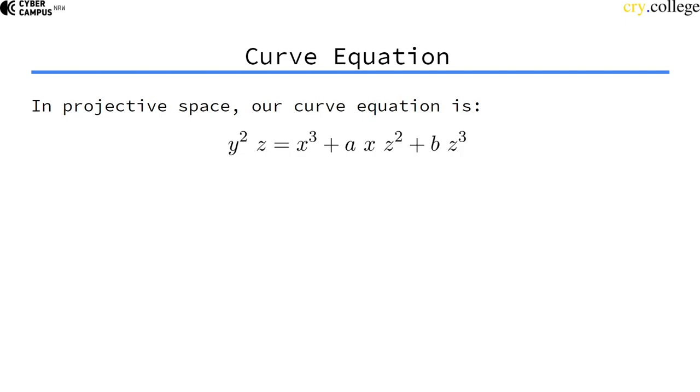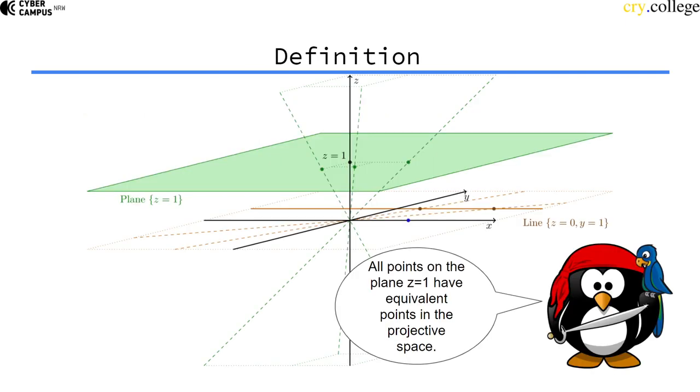So in projective space our curve equation is actually a bit different as you can see here but that's not important for our use case at the moment. But it turns out all points on the plane z equals 1 have equivalent points in the projective space as I've mentioned earlier. So this point here is on the plane on the curve maybe but all other points that are also on this line are actually projectively equivalent to this point on the plane on the curve.